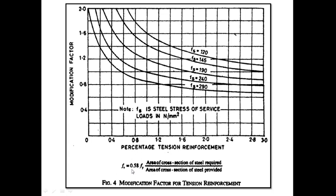FS is given as 0.58 Fy into area of cross-section of steel required upon area of cross-section of steel provided. In the numerator, it is the steel required, and in the denominator, it is the actual steel provided. Fy is the yield strength of steel in Newton per mm².